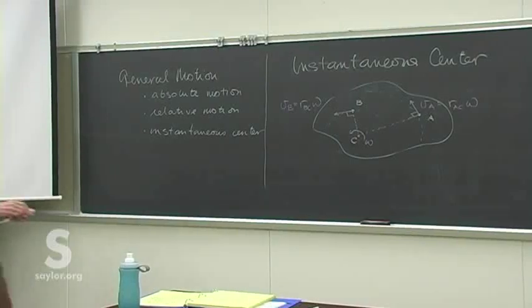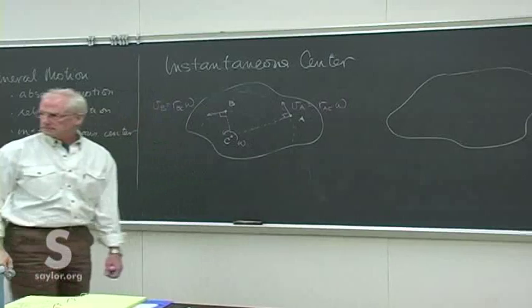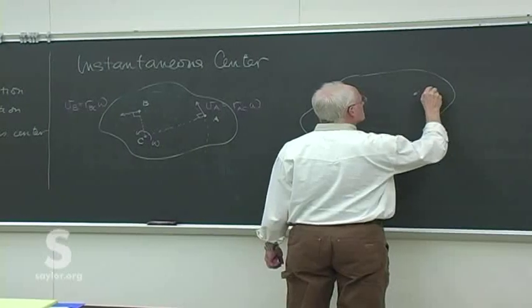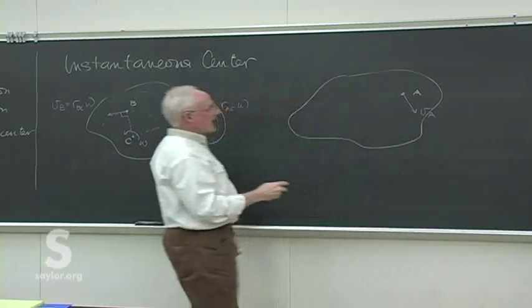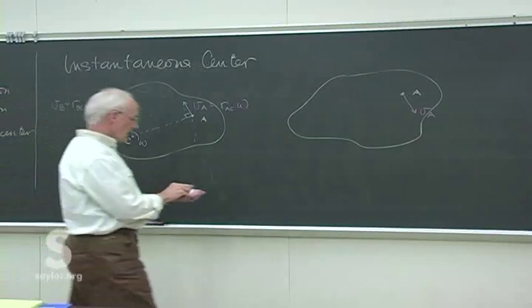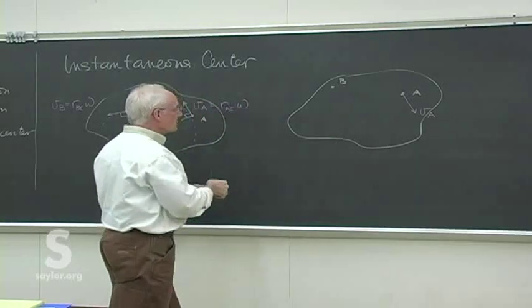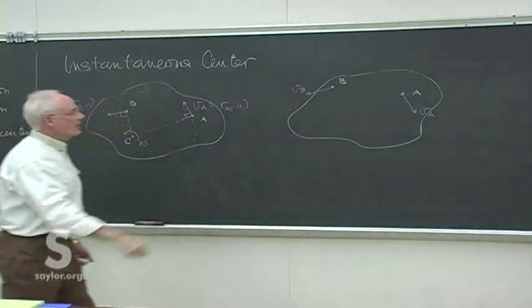The deal with the method of instantaneous center is: if we have some rigid body, and we know how two points are moving — some point here with a velocity in that direction — we don't necessarily need to know the magnitude for this method, but we do need to know its direction. And we know some other point B moving in some other known direction, something like that.